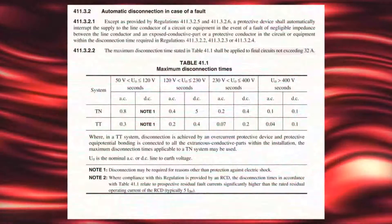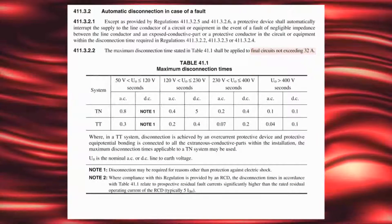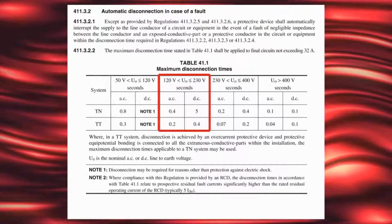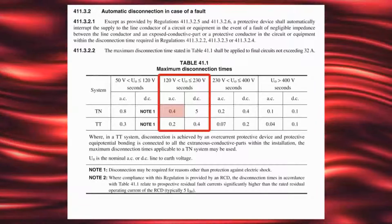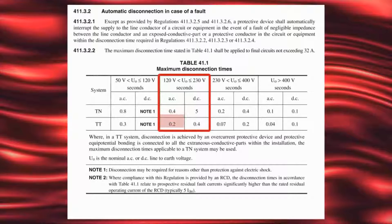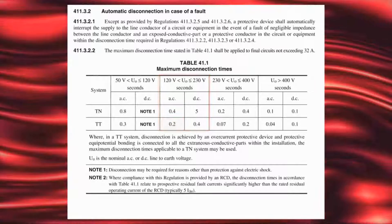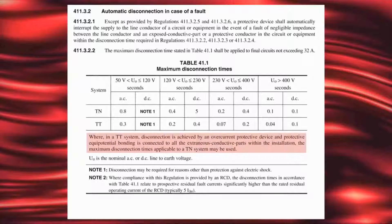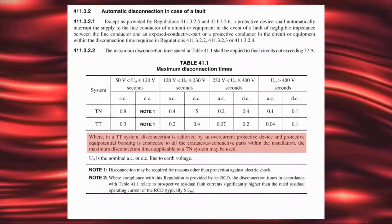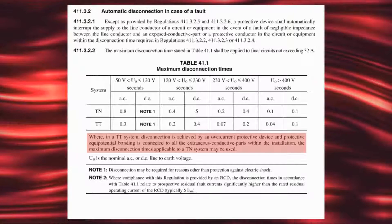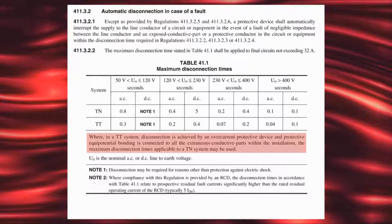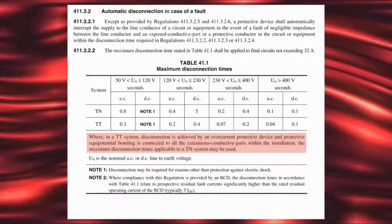The wiring regulations provide maximum disconnection times for all circuit types. This table covers final circuits not exceeding 32 amps. For 230 volt supplies, the protective device must disconnect the supply to the line conductor within 0.4 seconds on a TN system and 0.2 seconds on a TT system. However, there is a note below which does allow the same disconnection time as a TN system where disconnection is achieved by an overcurrent device and protective equipotential bonding is connected to all extraneous conductive parts in the installation.